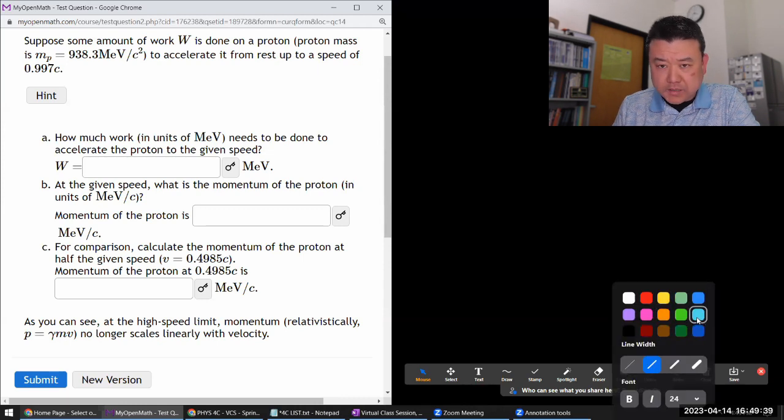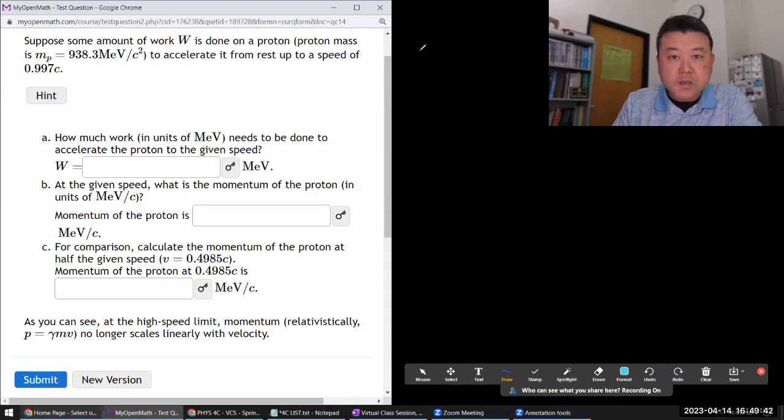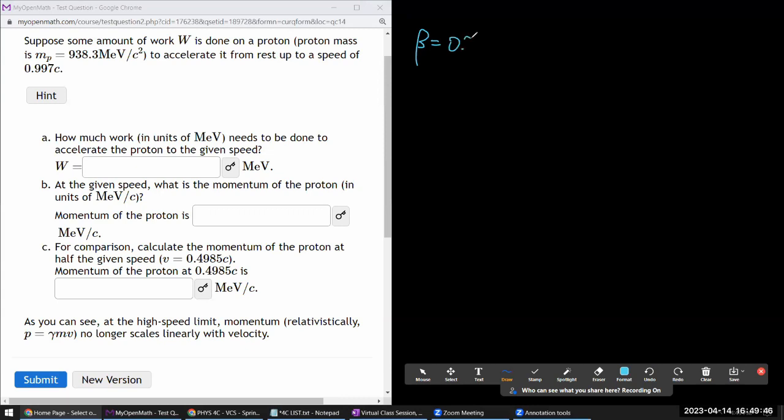The question gives us the speed of the particle, which is 0.997. It's given us the rest energy of the particle, mc squared is 938.3 MeV. When it's asking for work done, I like to think in terms of the total energy. So let me write the usual definitions. Beta is defined as speed of something in the unit of speed of light.